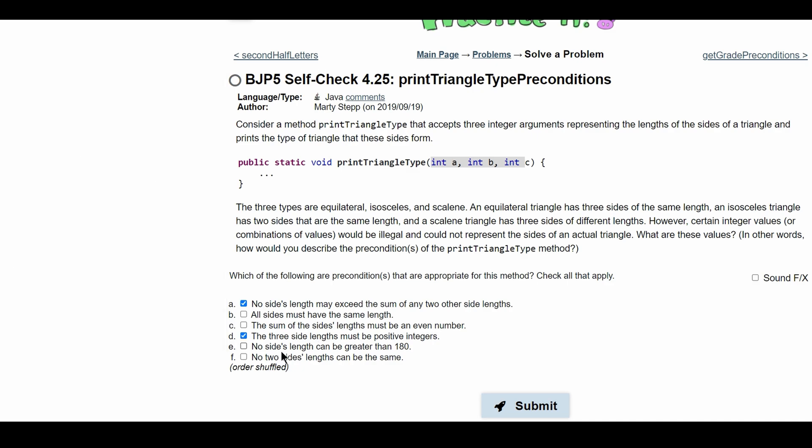For E, no side's length can be greater than 180. That's just silly because we can make a triangle as big or small as we want.